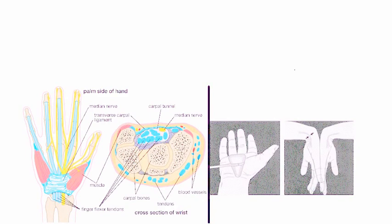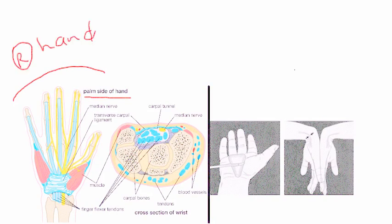Here we have a very nice diagram of the hand, and this is the palm side of the hand, representing the right hand. They've taken a cross-section and shown it to you here.